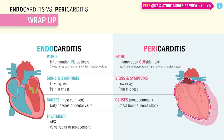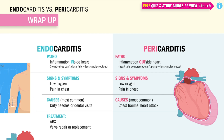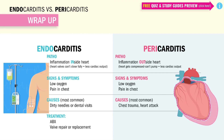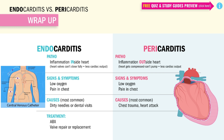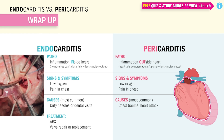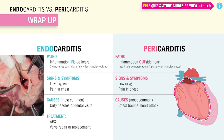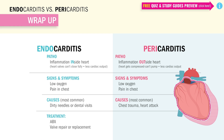As far as treatments for endocarditis, if you have an infection — which is usually the case — we'll give antibiotics between four and six weeks at home with an IV PICC line or central line. You can even do valvular repair or replacement surgery.